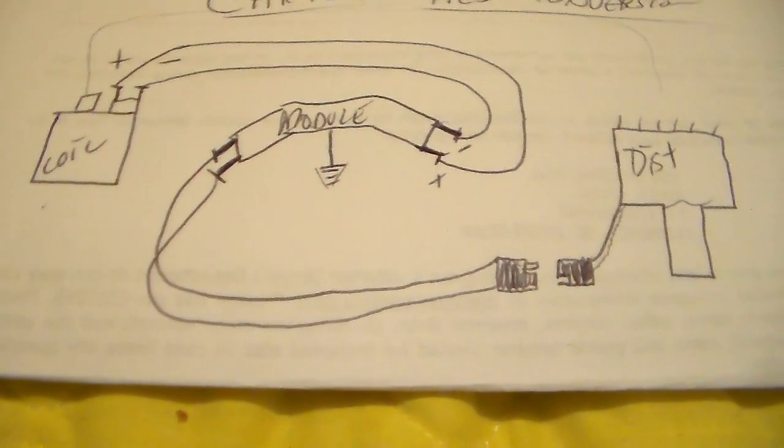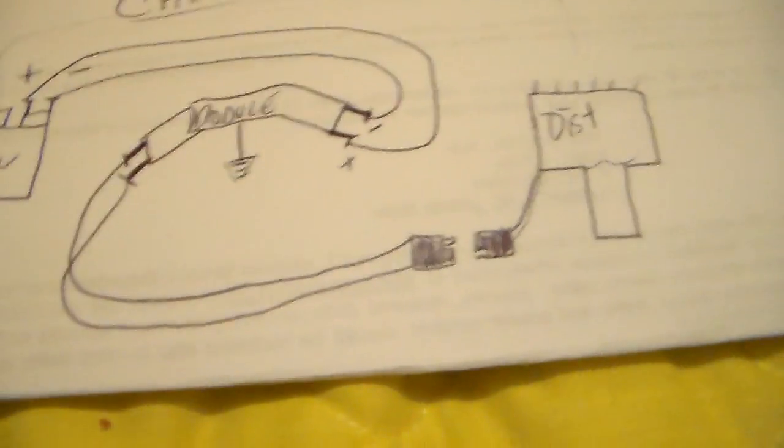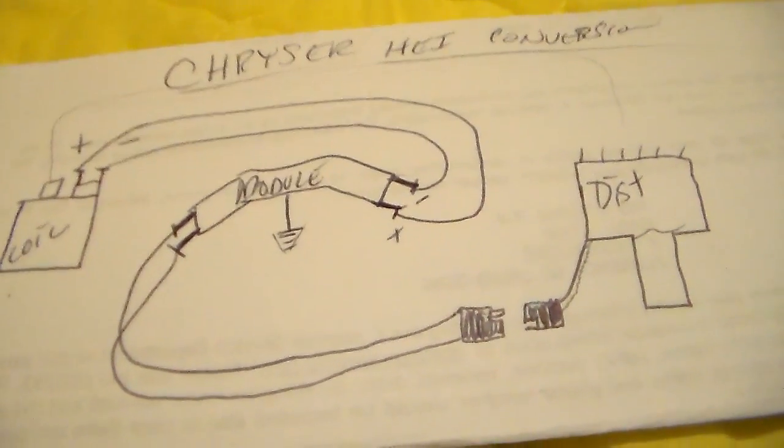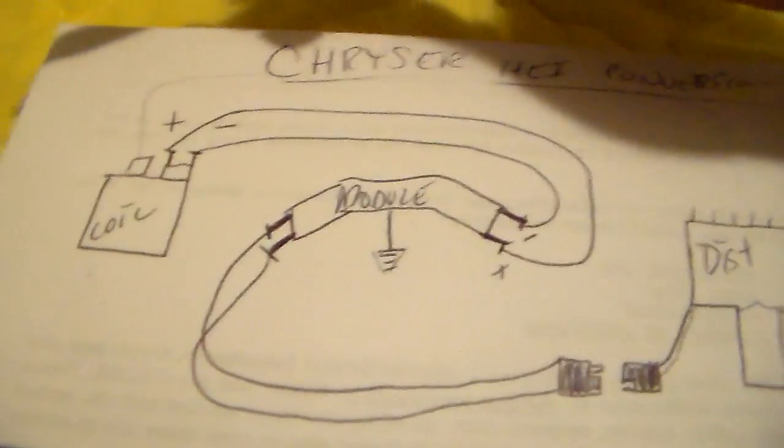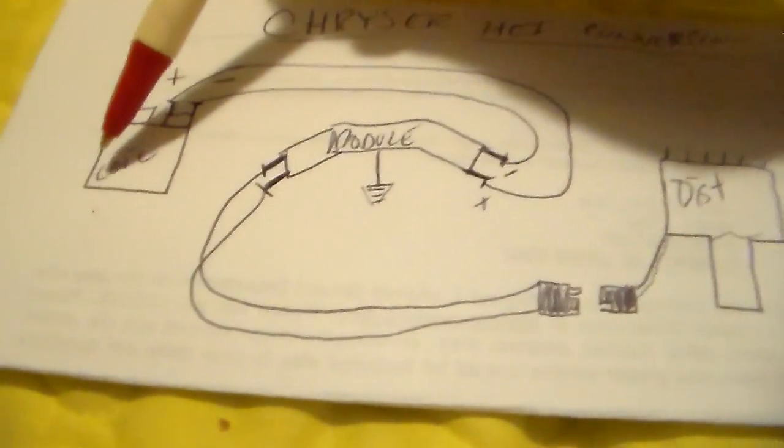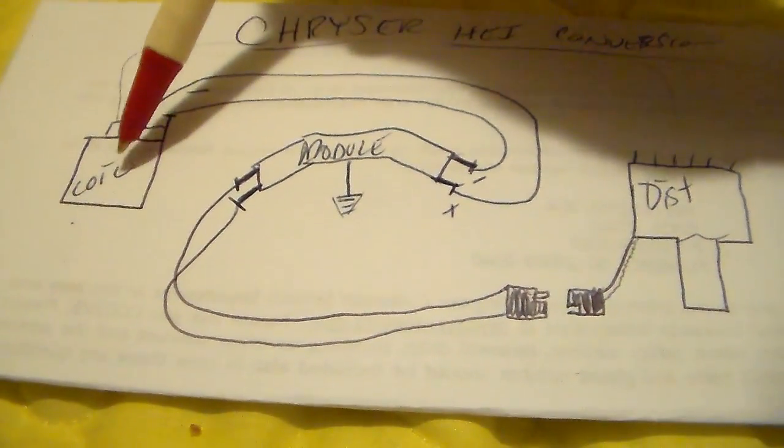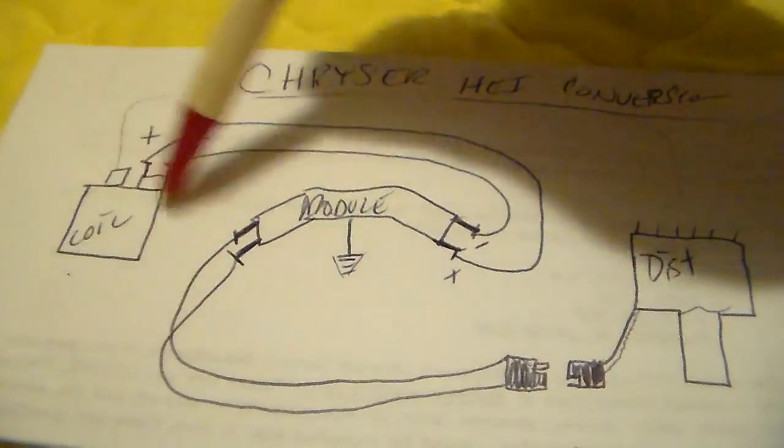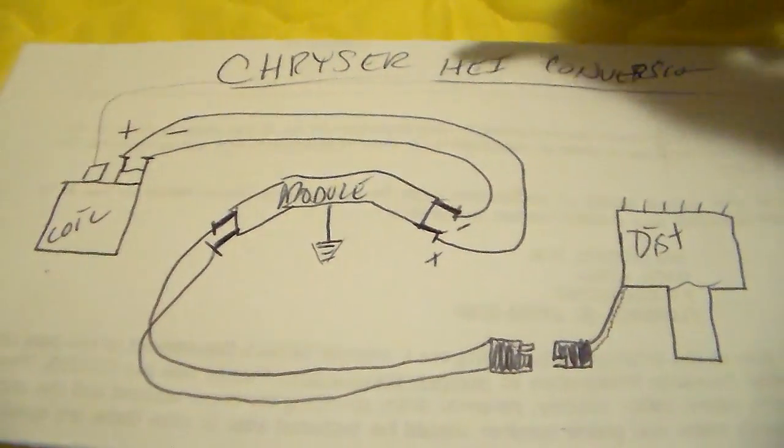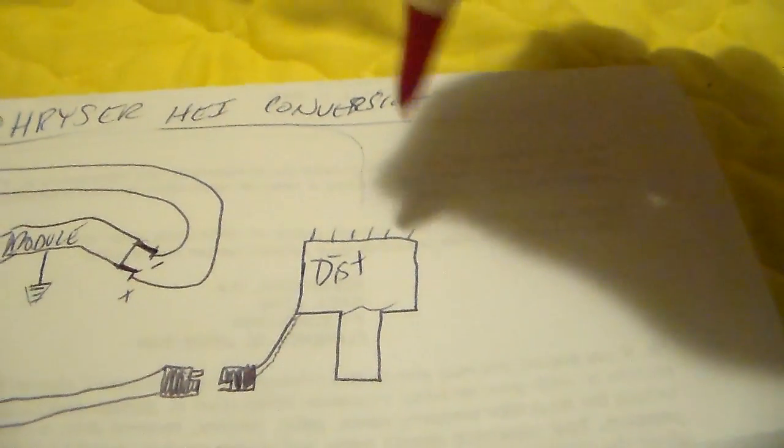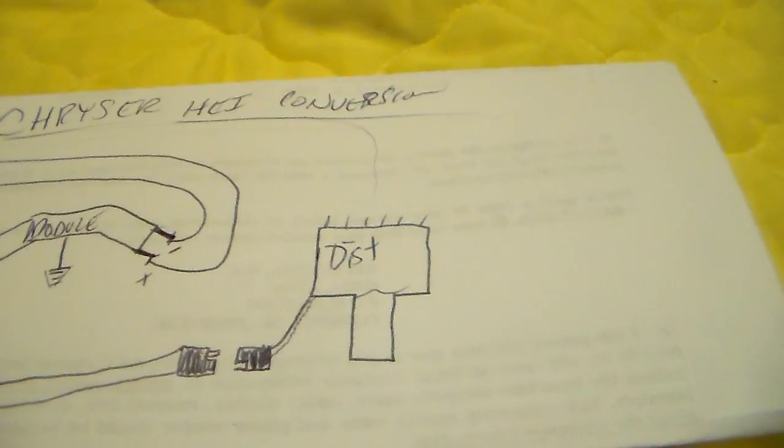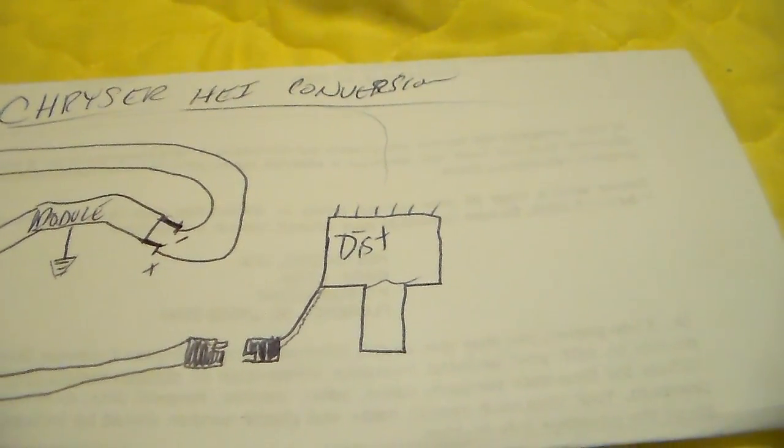First thing you're going to look at is you just have three components to hook up wiring-wise: you got a coil and a module and you have a distributor. That's all this does here.